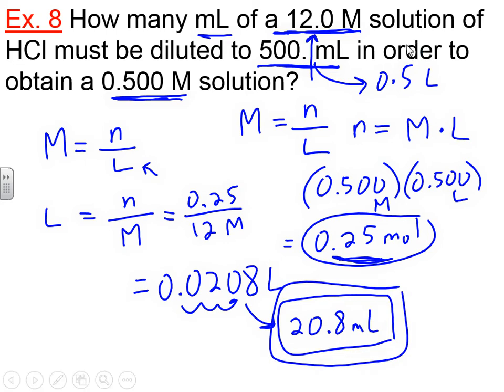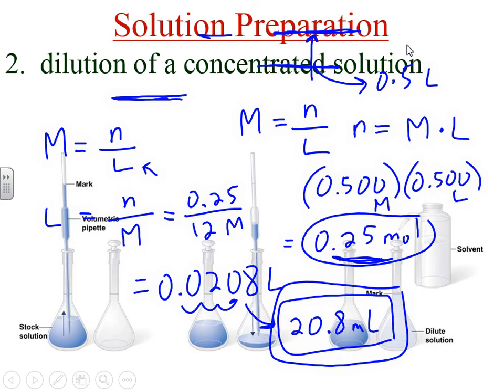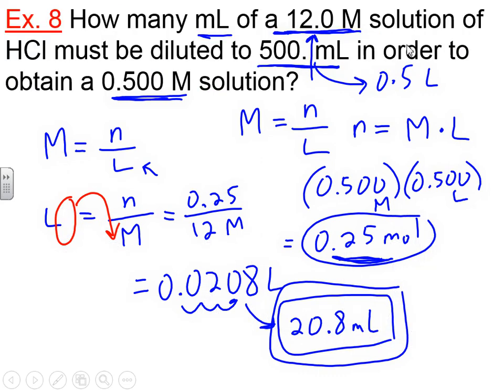So this is our stock solution — 20.8 milliliters gets pulled out, placed into the new dilute solution, and then diluted down to a volume of 500 mL. That's exactly what we want.